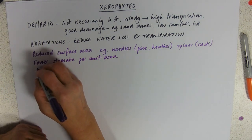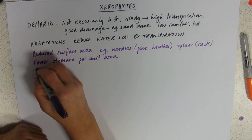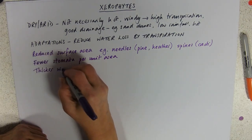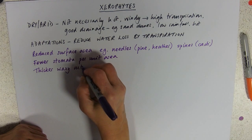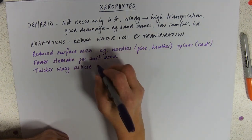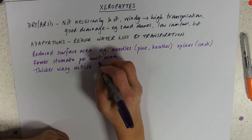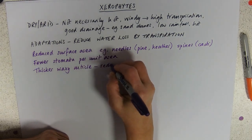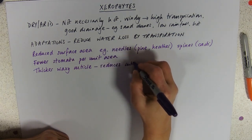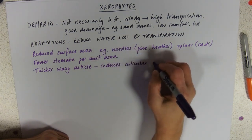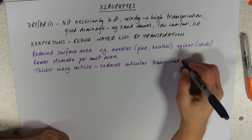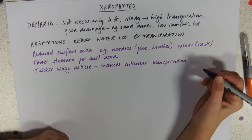Plants - and obviously this is the one that students tend to think of - can have a thicker waxy cuticle than normal. What that does is it reduces cuticular transpiration, that's the loss through the cuticle, which you can therefore infer isn't entirely as waterproof as you would wish.